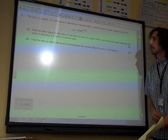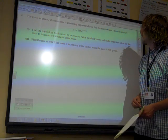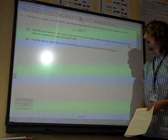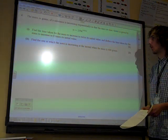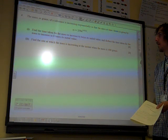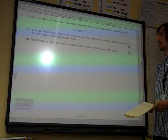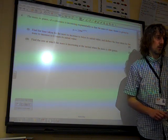The mass in grams of a substance is increasing exponentially so that the mass at time t hours is given by m equals 250e to the 0.021t. Find the time taken for the mass to increase to twice its initial value and deduce the time taken for it to increase to eight times its initial value.